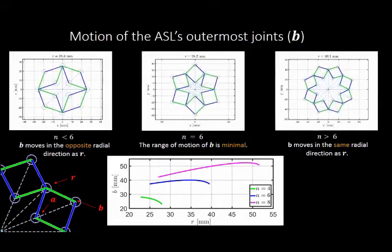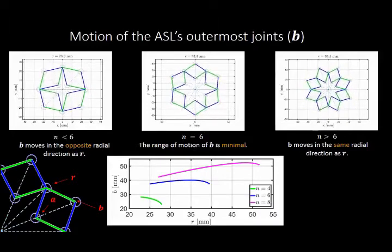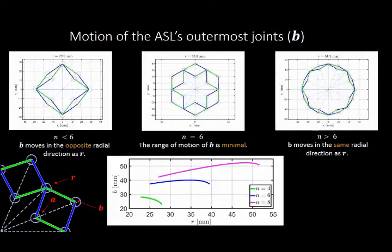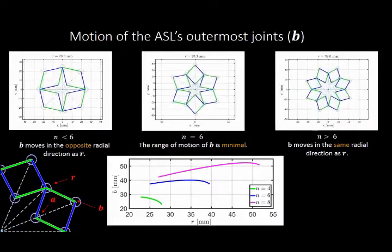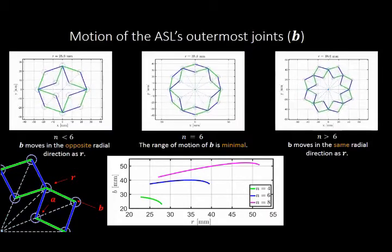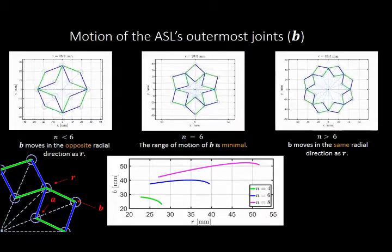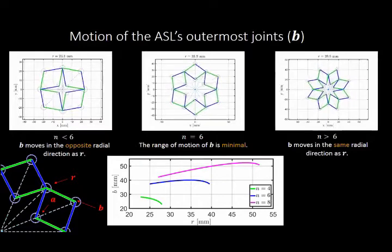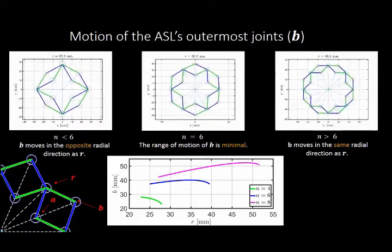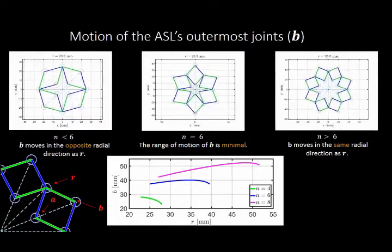For a linkage with less than 6 rhombuses, B moves in the opposite radial direction as R. For a linkage with 6 rhombuses, the range of motion of B is minimal. For a linkage with more than 6 rhombuses, B moves in the same radial direction as the linkage radius R.